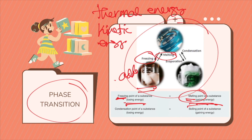Freezing is the reverse process of melting. As the liquid loses heat, the particles' movement slows down. The particles continue to move more and more slowly until the attractive forces between them are strong enough to hold the particles in a fixed position, transforming the liquid into a solid.